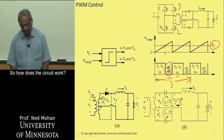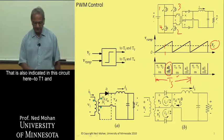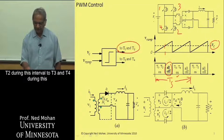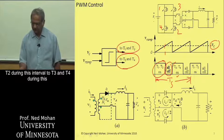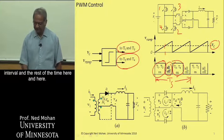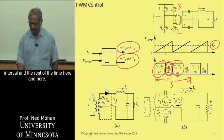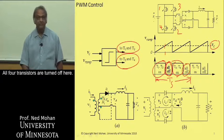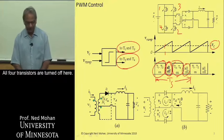So how does this circuit work? And that is also indicated in this circuit here, to T1 and T2 during this interval, to T3 and T4 during this interval, and the rest of the time here and here, all four transistors are turned off here.